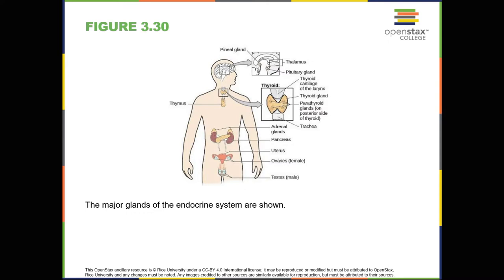Major glands. The pituitary gland descends from the hypothalamus at the base of the brain and acts in close association with it. The pituitary is often referred to as the master gland because its messenger hormones control all of the other glands in the endocrine system, although it mostly carries out instructions from the hypothalamus. In addition to messenger hormones, the pituitary also secretes growth hormone, endorphins for pain relief, and a number of key hormones that regulate fluid levels in the body.